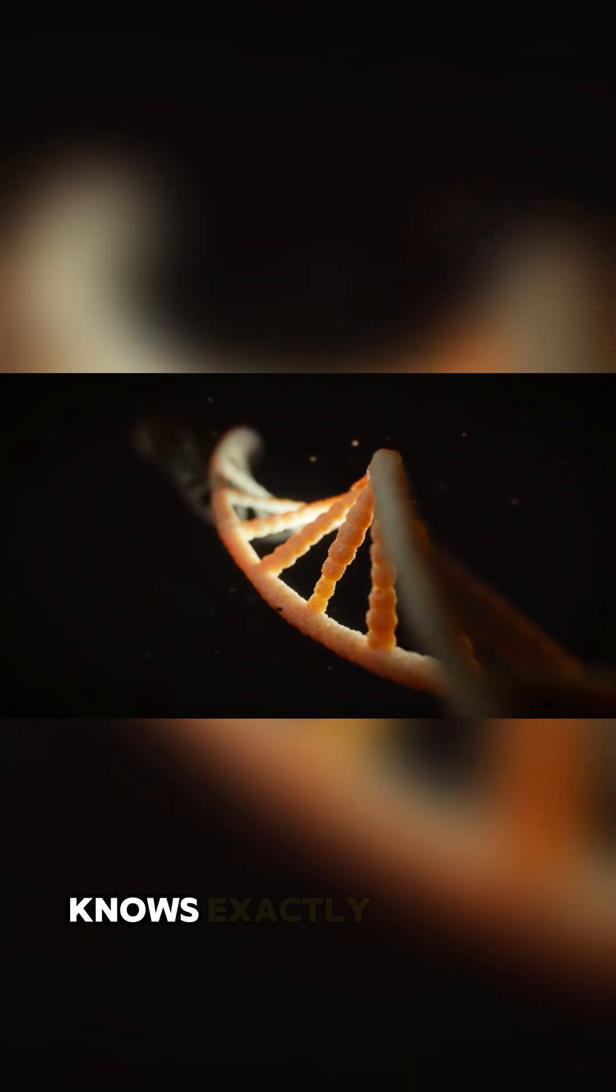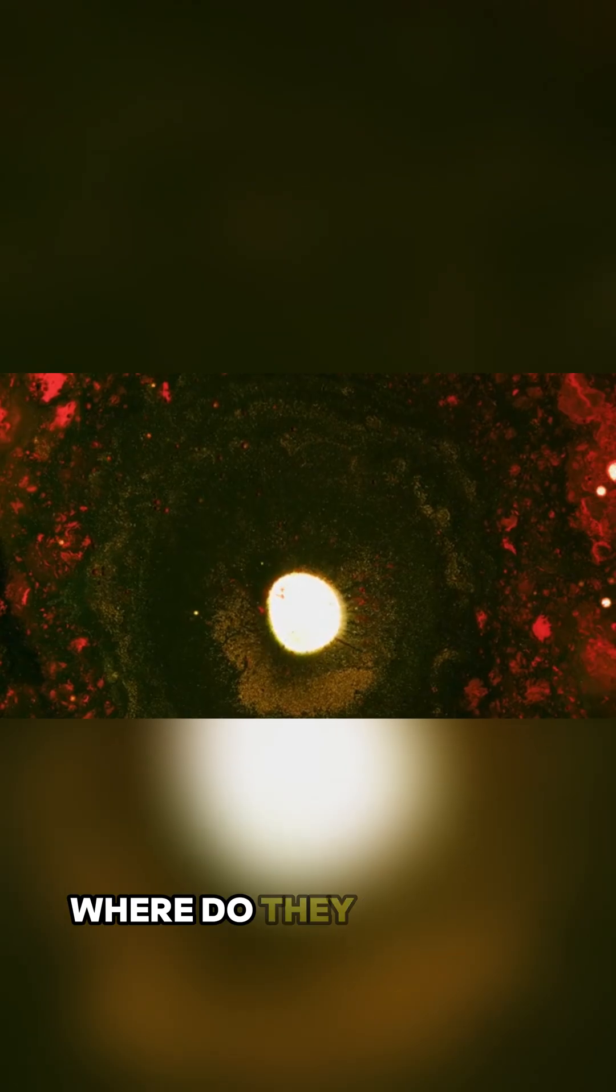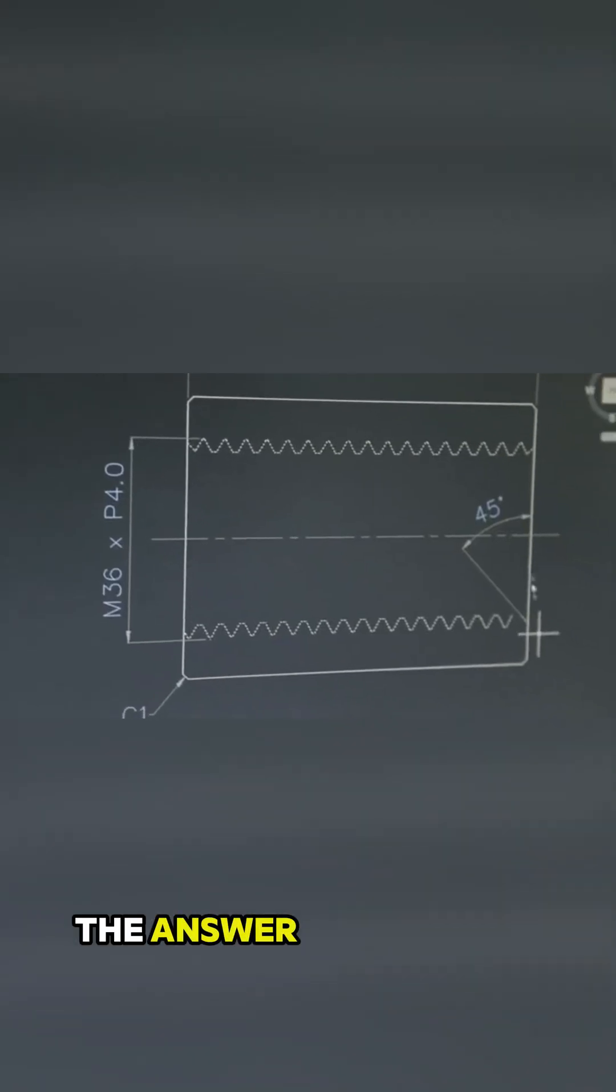Every cell in your body knows exactly what to do, from building your bones to growing your hair. But how do they know? Where do they get their instructions? The answer is DNA.